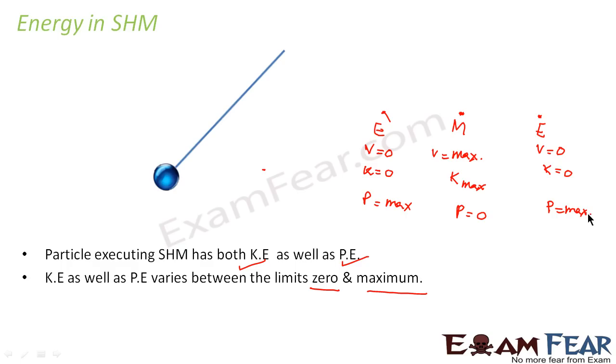So when we consider the example of this simple pendulum, the height at the extreme positions is more. If we consider that the origin to be the mean position, that means height at mean position is zero. So potential energy is zero. Whereas height at the extreme ends is some positive quantity. Therefore, the potential energy is maximum. So from this, we can see that at extreme end, kinetic energy is zero. Potential energy is maximum.